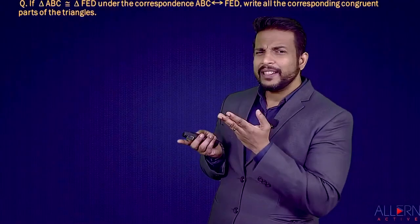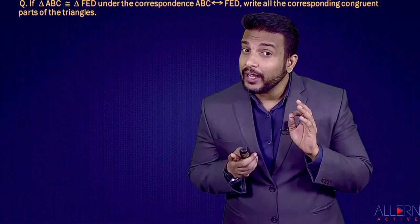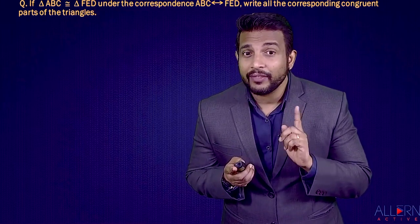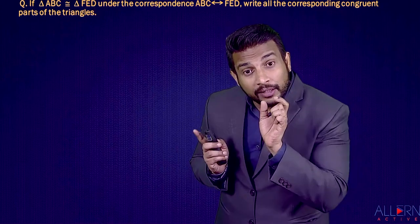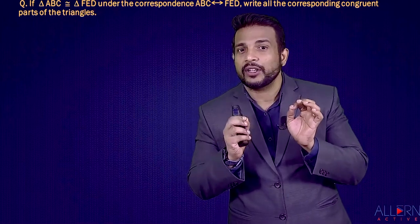Let's see another very simple question — so easy you're going to answer it on your own. You've already learned it in the basics. If triangle ABC is congruent to triangle FED, they have given the names of the two triangles with the congruent symbol in between. That means we know these two triangles are congruent, and the correspondence is also mentioned and confirmed.